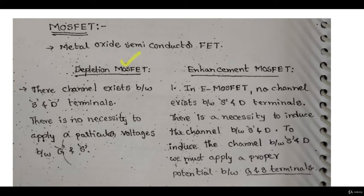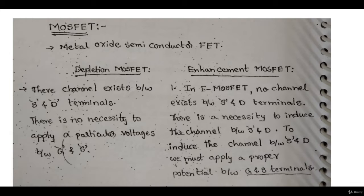The two types are depletion type and enhancement type. Within each, there is an N-type and a P-type, giving us four types total: depletion N-type, depletion P-type, enhancement N-type, and enhancement P-type MOSFETs.